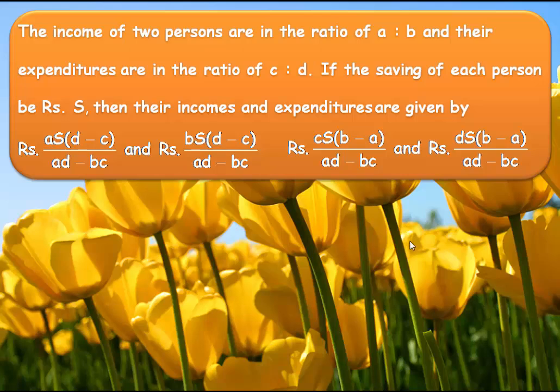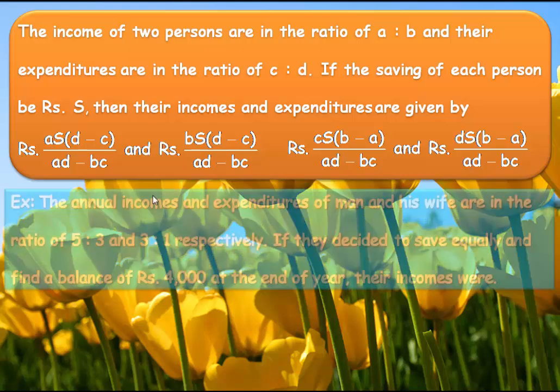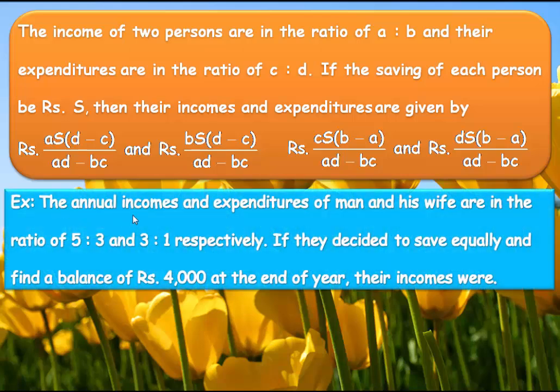The example problem for this model is: the annual incomes and expenditures of a man and his wife are in the ratio 5:3 and 3:1 respectively. If they decided to save equally and find a balance of Rs. 4,000 at the end of the year, find their incomes.